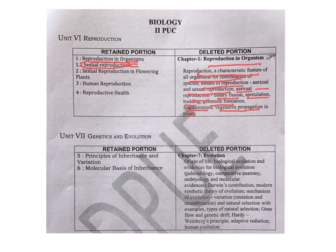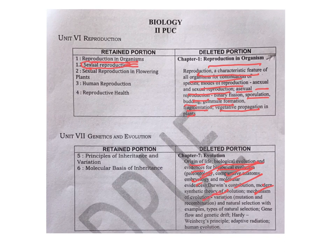The third chapter — the seventh chapter — on evolution is totally removed from the syllabus. That includes origin of life, biological evolution, and evidences for biological evolution — paleontology, comparative anatomy, embryology, molecular evidence. Darwin's contribution is deleted, modern synthetic theory of evolution is deleted, mechanism of evolution is deleted — variation, natural selection with examples, types of natural selection, gene flow, genetic drift, Hardy-Weinberg's law, adaptive radiation, and human evolution — everything removed.